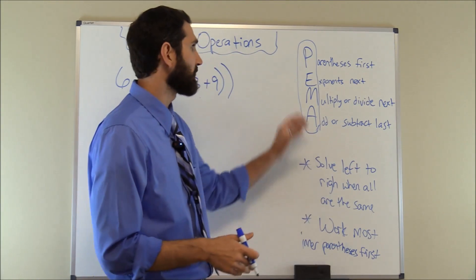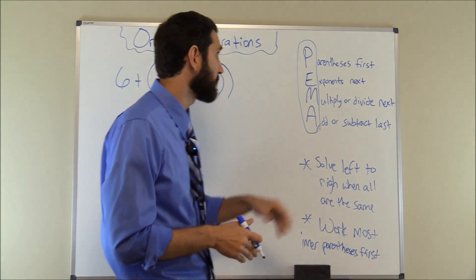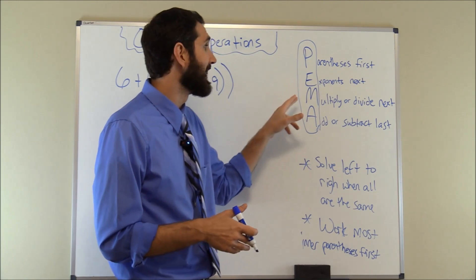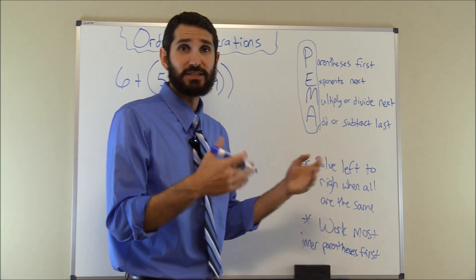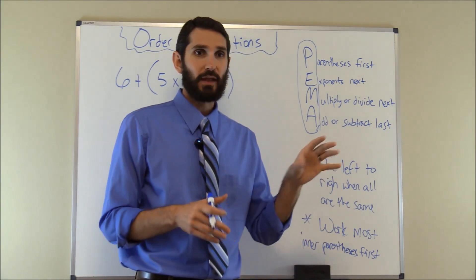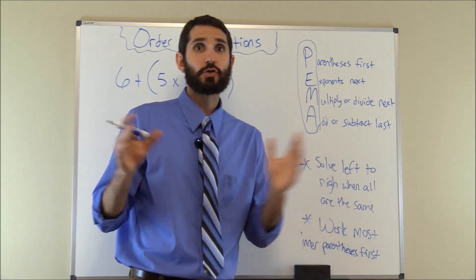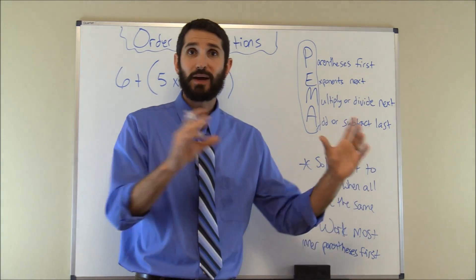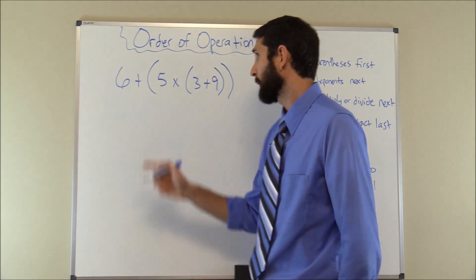To do this I'm going to give you a few tips. First, you need to remember the mnemonic PIMA — that will tell you the order in which you solve a problem. First you start with parentheses (P), next you work exponents, then you multiply or divide, and then you add and subtract last. A couple quick tips: whenever you have a problem with only addition and subtraction, you start from left to right; and second, you work the most inner parentheses first if you have multiple parentheses within the problem.